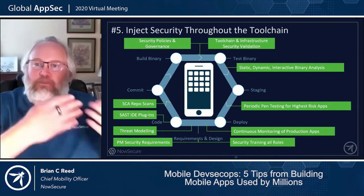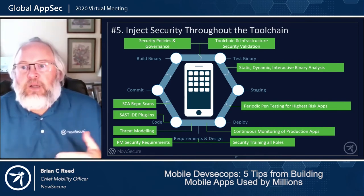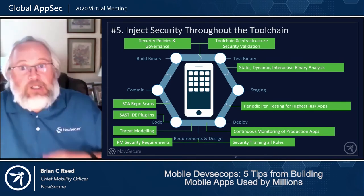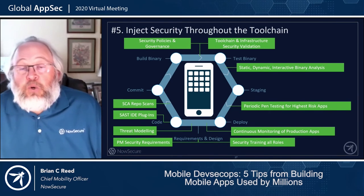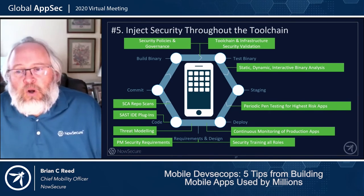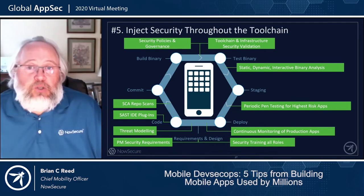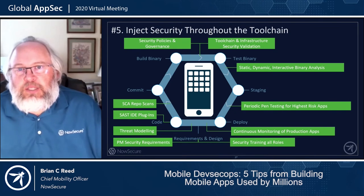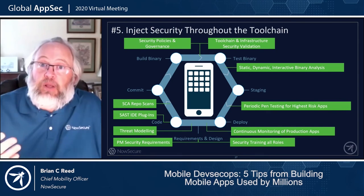As you build the app, do your static, dynamic, and interactive binary analysis as part of the cycle. Feed those tickets back, and for high-risk apps do your pen testing. Make sure you have a mechanism to monitor those production apps as well — it's entirely possible something didn't translate right into the app store when it goes public, someone might resubmit your app in a rogue way, or a developer might have snuck past you and pushed a patch live, but you can catch it by monitoring the app store and production infrastructure. All of this doesn't work without security policies and governance in place.